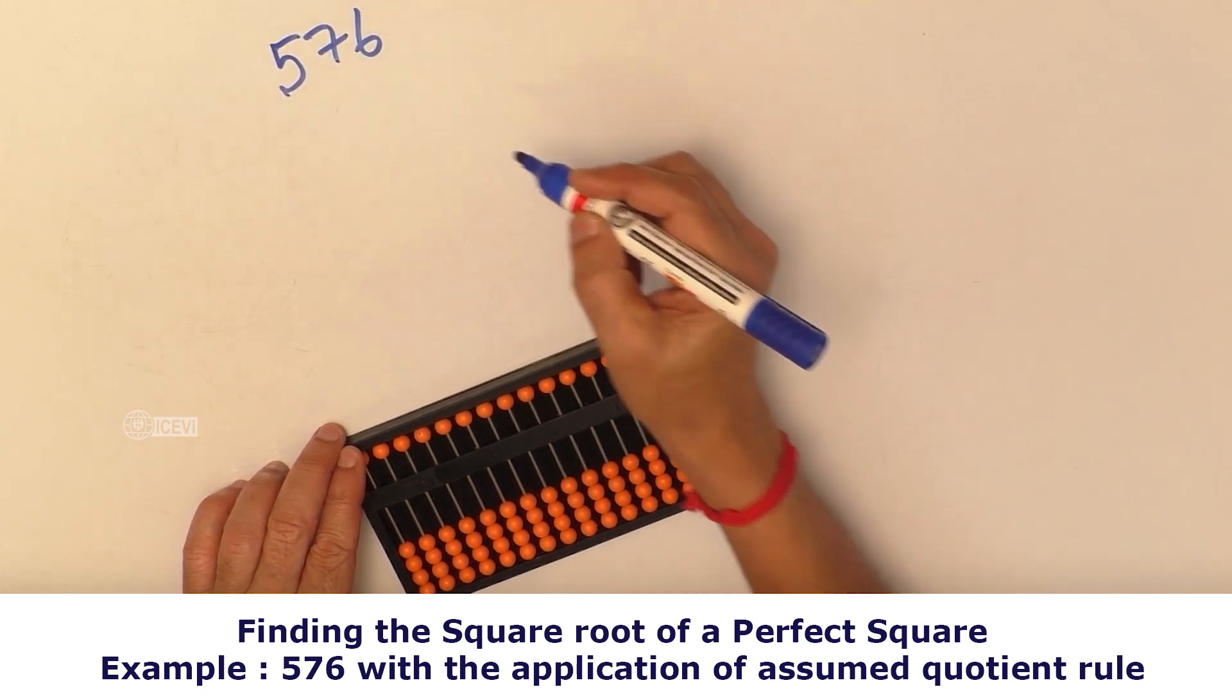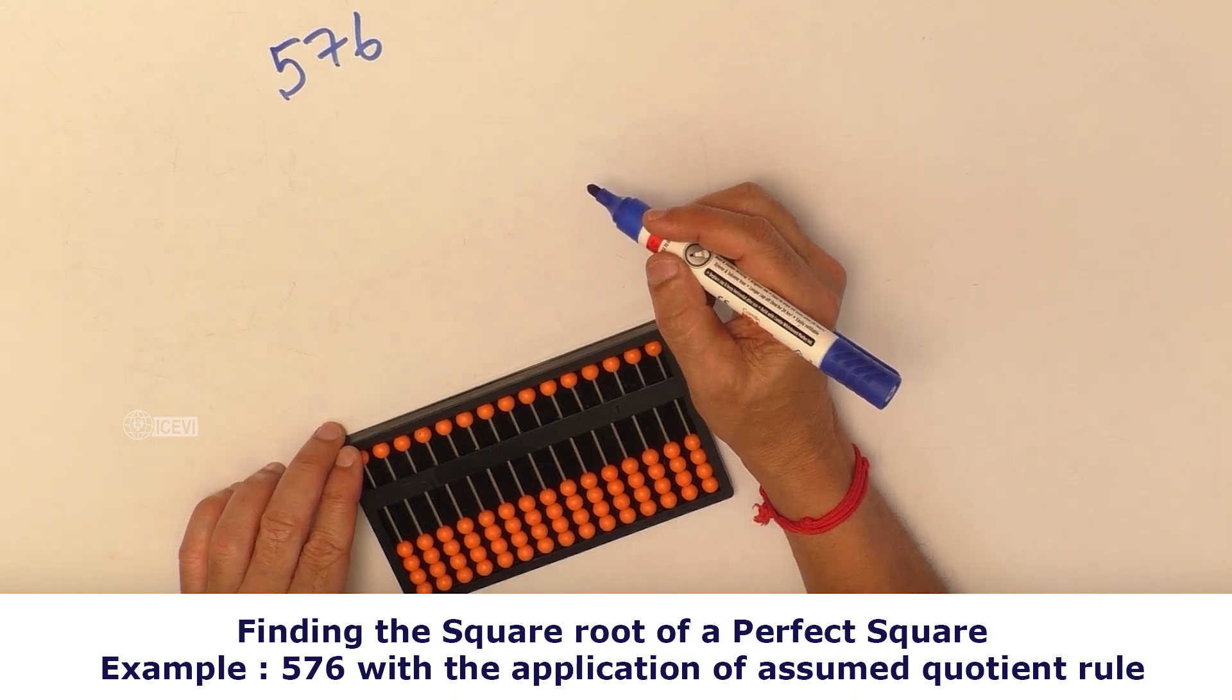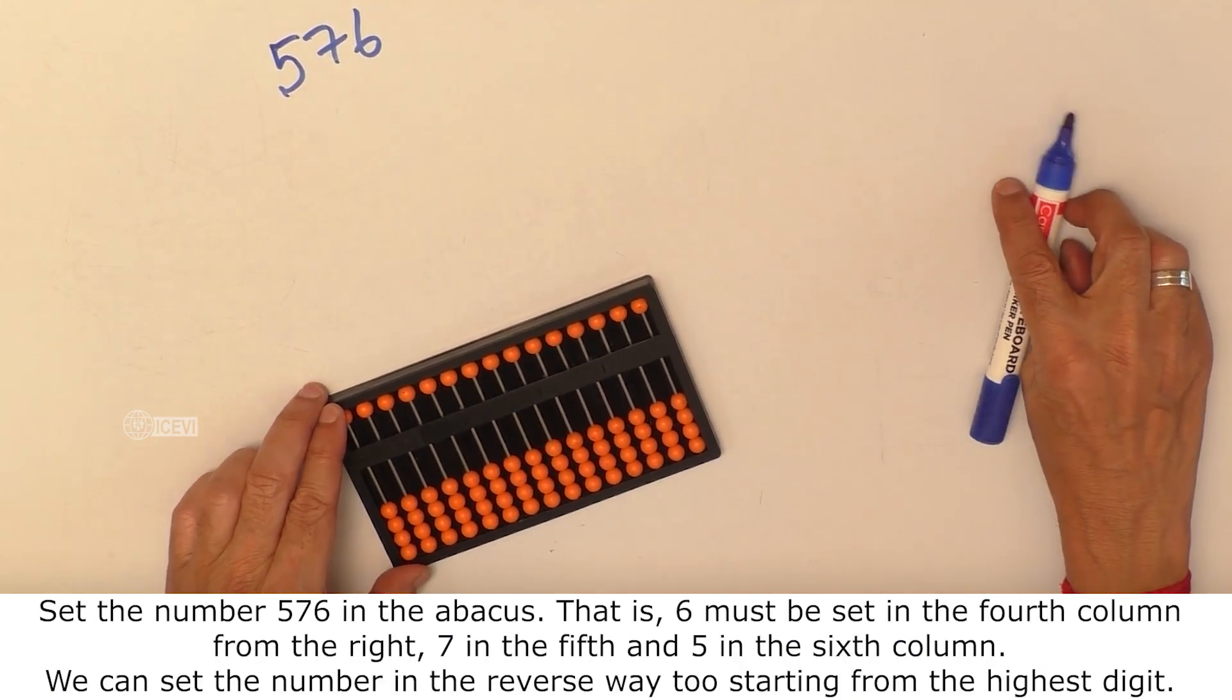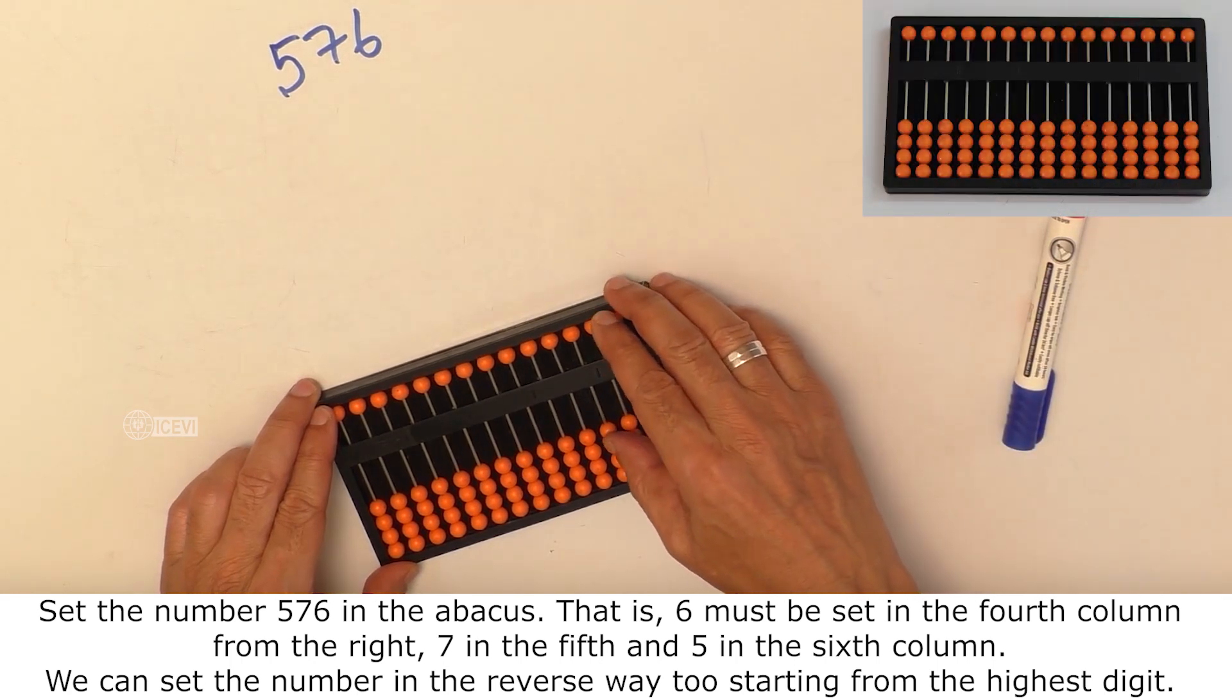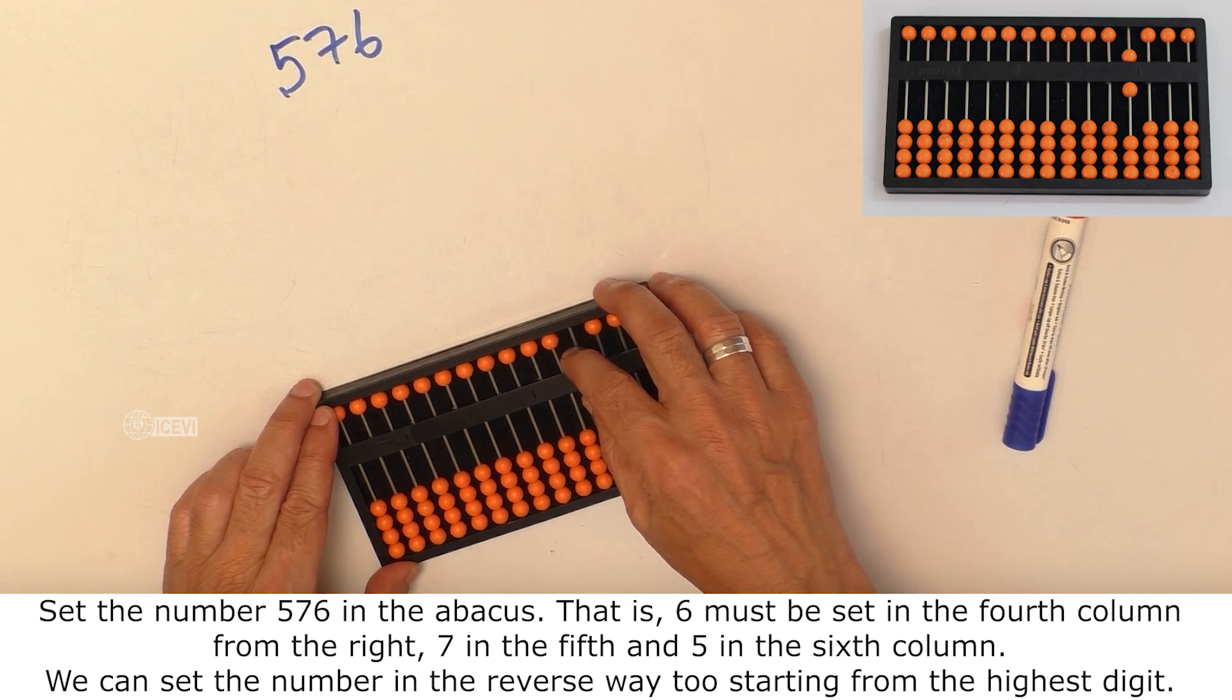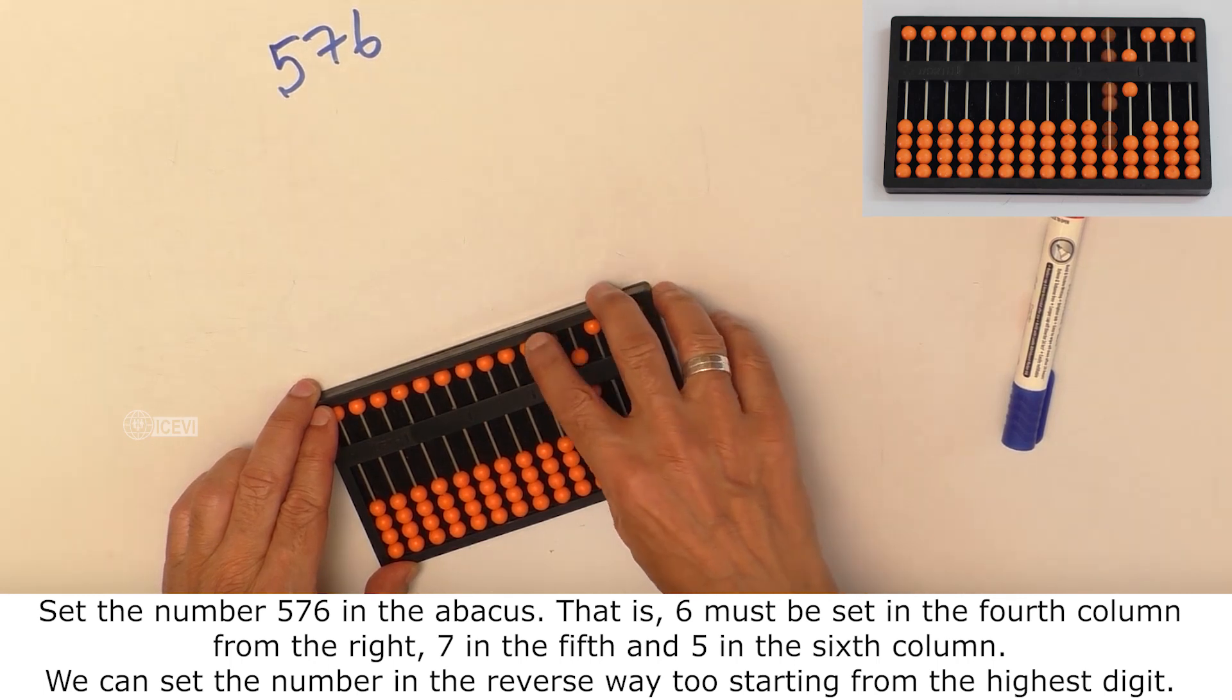With application of assumed quotient rule, set the number 576 in the Abacus. That is, 6 must be set in the 4th column from the right, 7 in the 5th column and 5 in the 6th column.